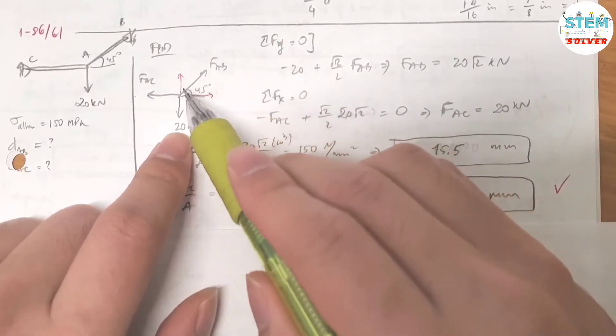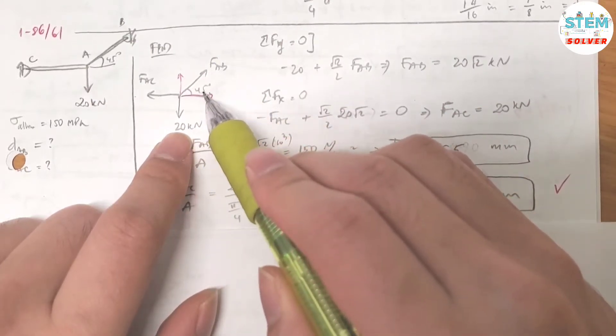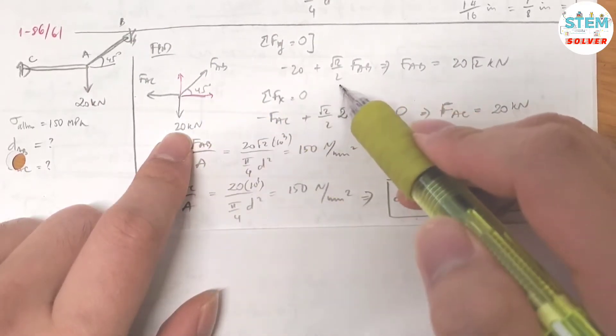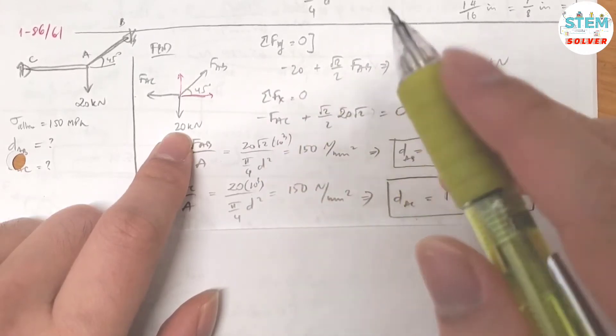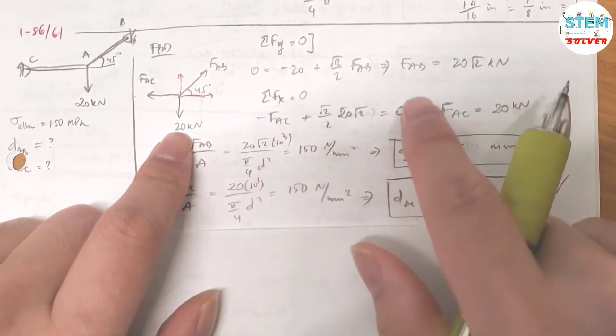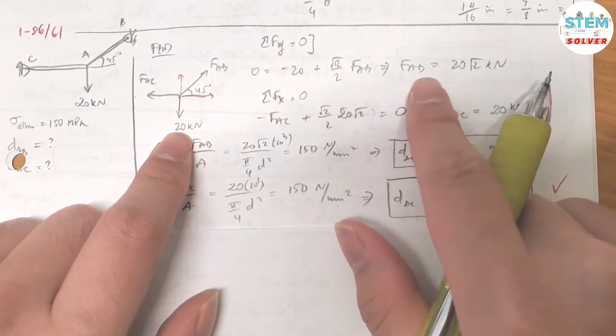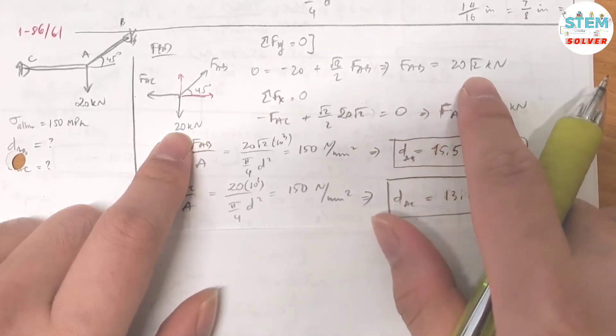For the y components, you have f times sine 45, which is square root of 2 over 2. This equals 0. Then solve for the unknown. I got f equals 20 square root of 2 kN.